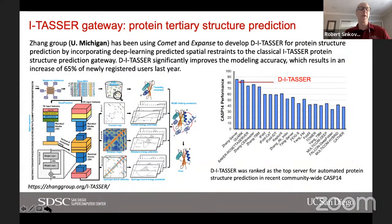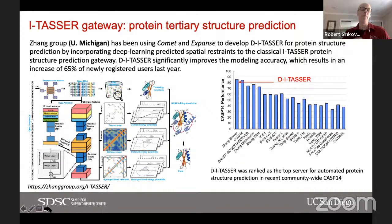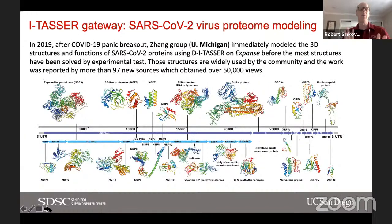One more gateway I want to highlight is the I-TASSER gateway for protein structure prediction. This is work done by the Zhang group at the University of Michigan — they had been users on Comet and made a very easy transition to Expanse. In the CASP14 competition, they were the top server for automated protein structure prediction. Of course there are new techniques now like AlphaFold and AlphaFold2, but I-TASSER still plays an important role for this community.